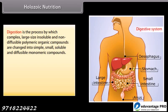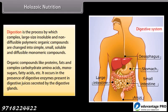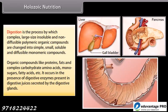Digestion is the process by which complex, large-size, insoluble, and non-diffusible polymeric organic compounds are changed into simple, small, soluble, and diffusible monomeric compounds. Organic compounds like proteins, fats, and complex carbohydrates are broken down into amino acids, monosugars, and fatty acids. It occurs in the presence of digestive enzymes present in digestive juices secreted by the digestive glands.